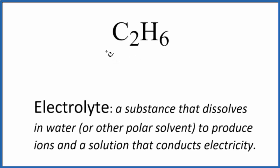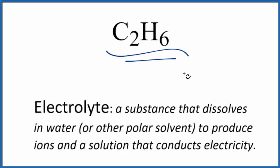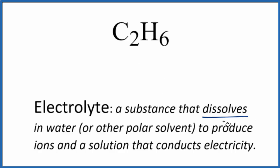The question is whether C2H6 is an electrolyte or a non-electrolyte. This is ethane. The definition of an electrolyte is something that dissolves in water or a polar solvent and produces ions. Because there are ions, it will conduct electricity.